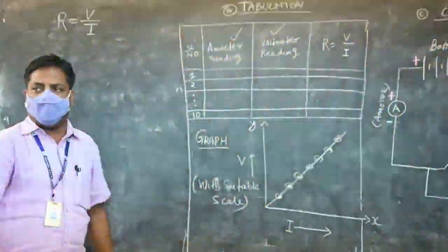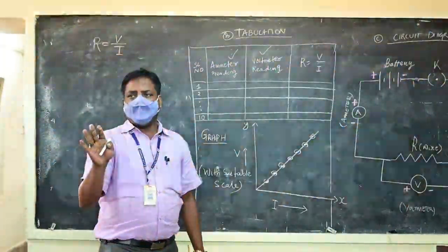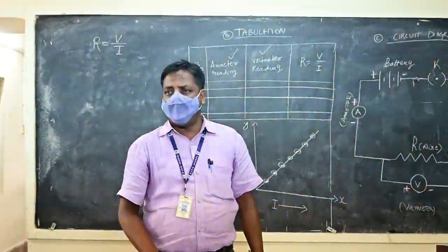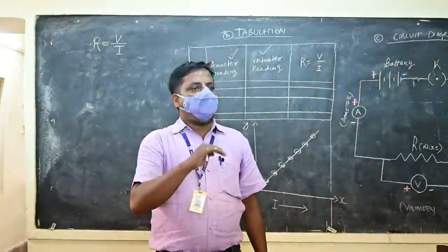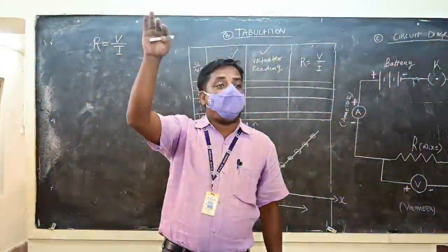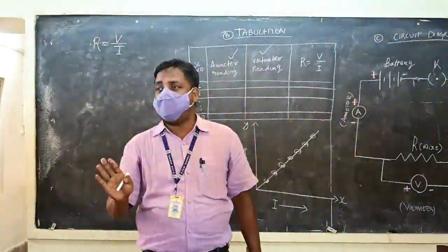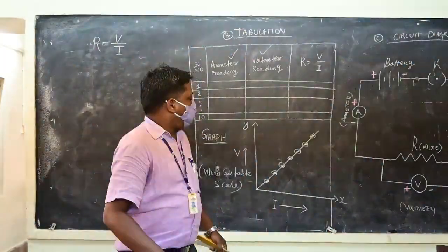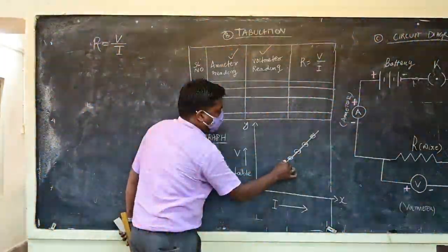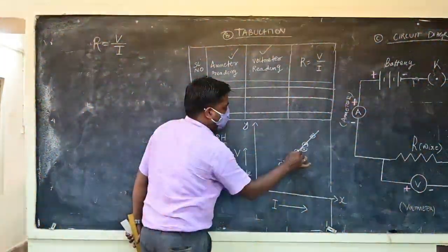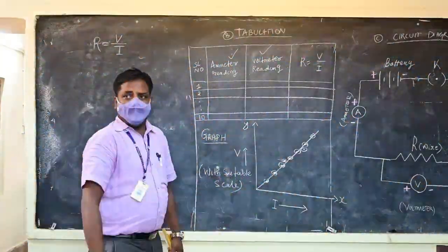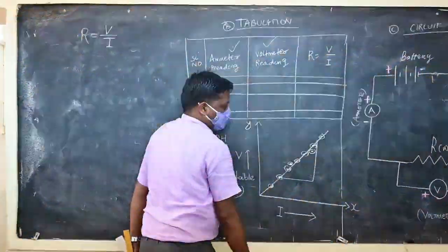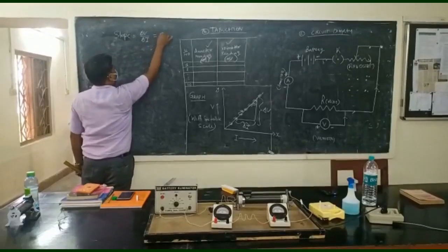Remember, the graph is a straight line. There is a possibility that a few readings may fall outside the line. Our job is to accumulate the maximum number of points that lie on the straight line and leave the outliers. After drawing the best-fit line, take the slope. The slope will give you the resistance in ohms.